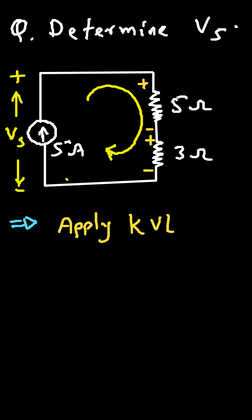So it will be minus Vs, then plus 5 into this is the value of resistance, into we have to multiply it with current. So current value is 5 ampere because the current through this 5 ohm and this 3 ohm will be same because they are connected in series.